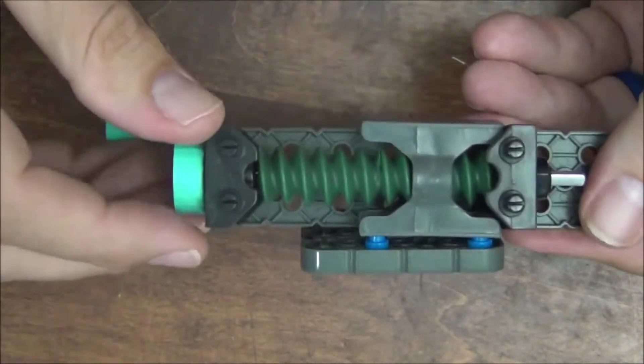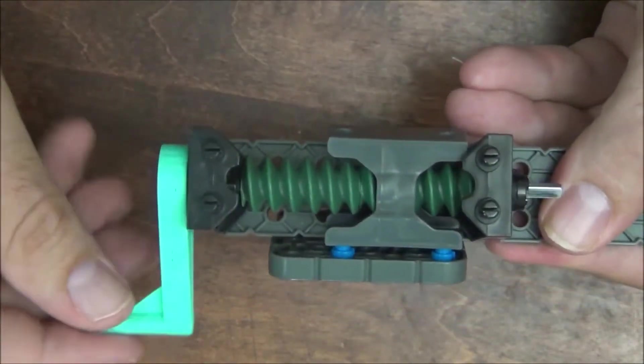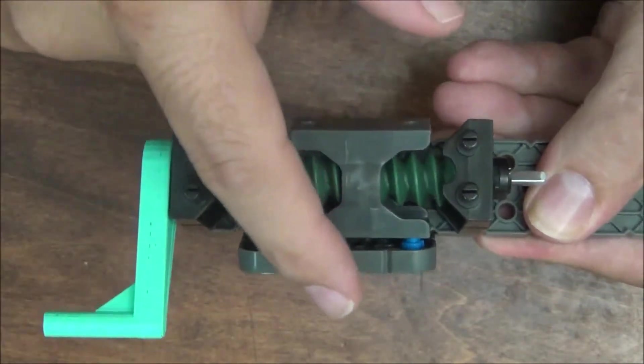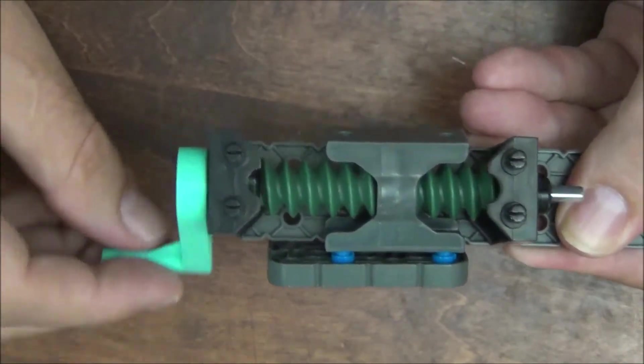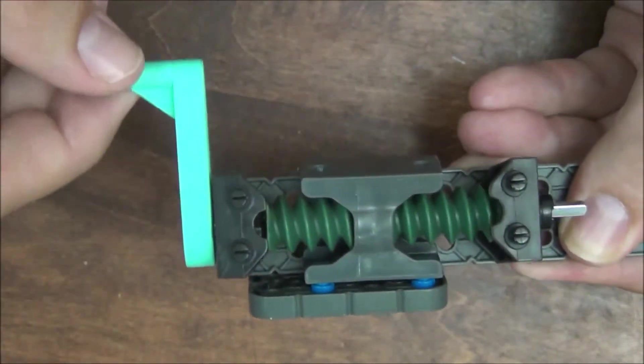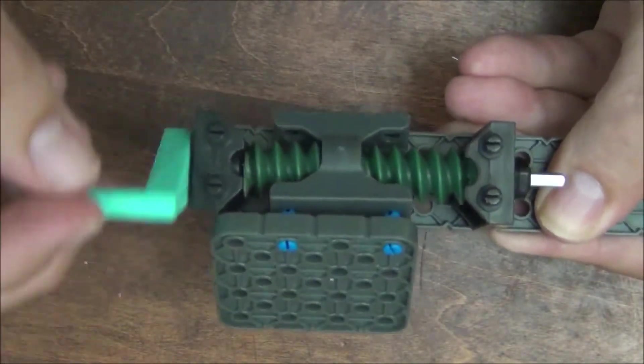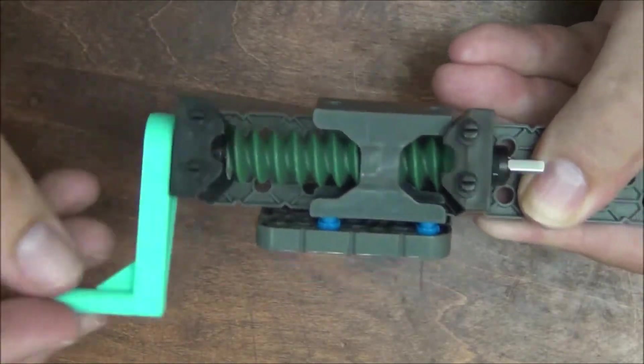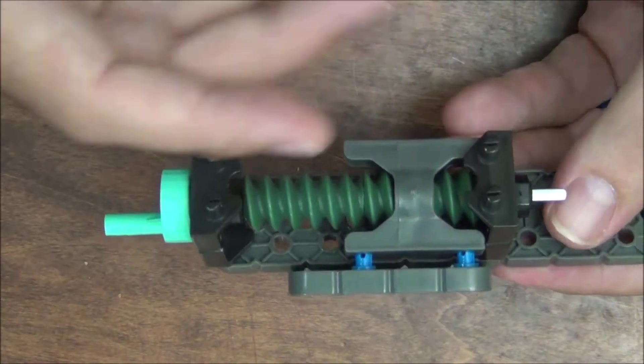What the lead screw does is that as you rotate it, because this piece is not allowing it to spin with the screw, it actually makes it slide along with the actual motion. So what's the point of this? What does it do?